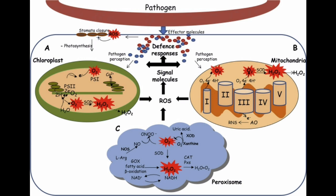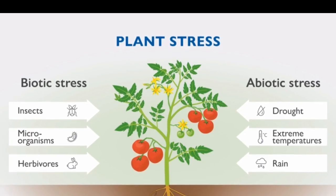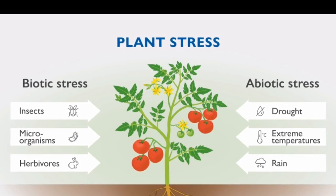Additionally, some cell compartments such as chloroplasts, mitochondria and peroxisomes are potential important sources of reactive oxygen species during abiotic and biotic responses.